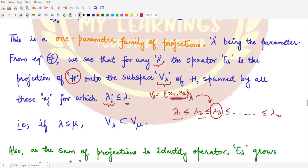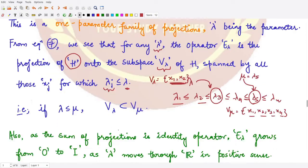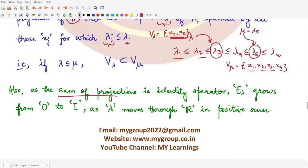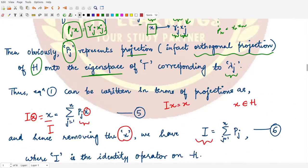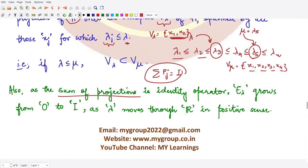If lambda equals lambda_3 and mu equals lambda_5, then V_lambda is spanned by x1 and x2, while V_mu contains x1, x2, x3, and x4, since lambda_1 through lambda_4 are all smaller than lambda_5. So V_lambda is contained in V_mu. Moreover, the sum of all projections P_j equals the identity operator, as established in the previous video.